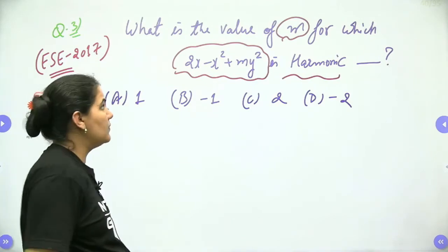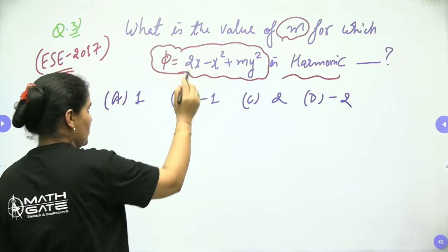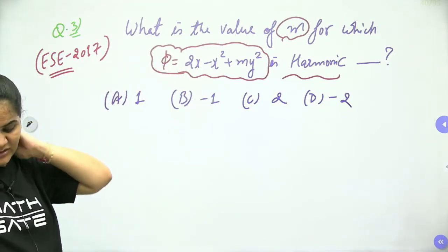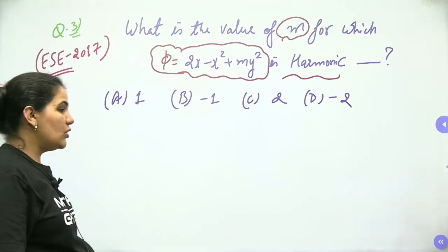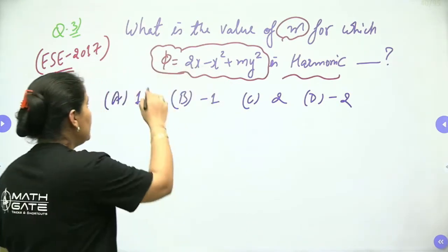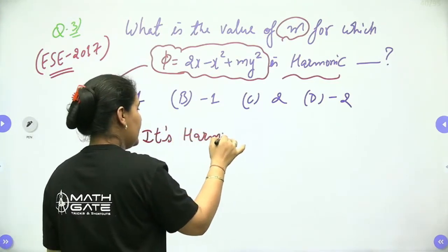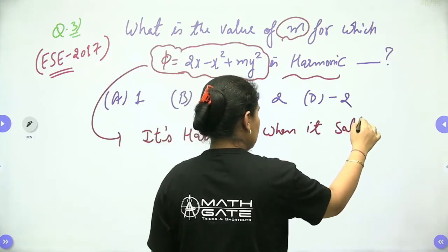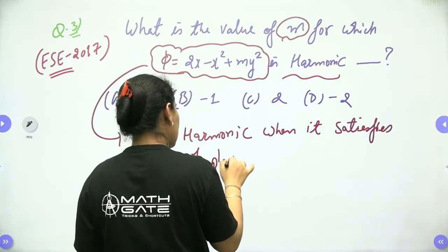Let the function φ equals 2x minus x² + my². Any function is said to be harmonic if it satisfies the Laplace equation. So φ is harmonic when it satisfies the Laplace equation.